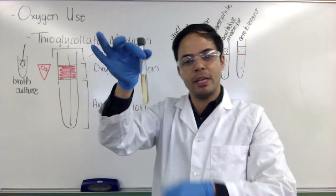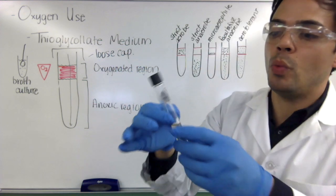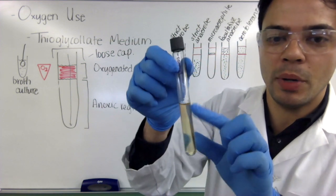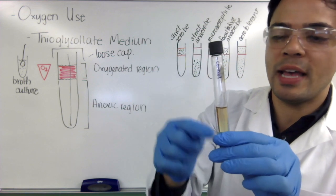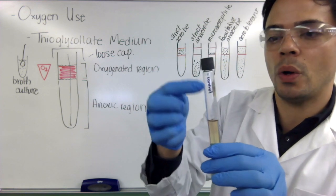And once you're done, make sure the tube is labeled. Now you want to label your tubes at the top, not the bottom. And that's because we don't want to obscure the region that we are going to be observing. So always write up top.